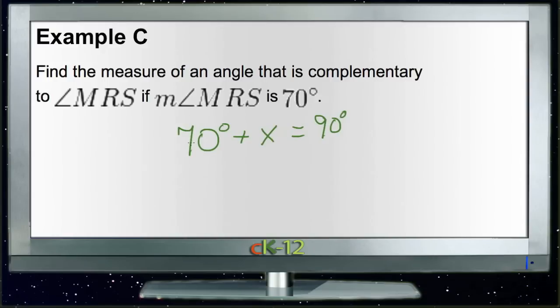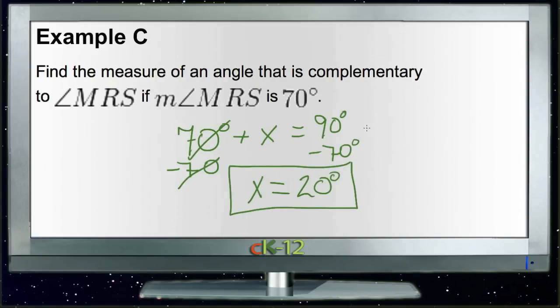Well, this is pretty simple now. We can see that all we need to do is subtract 70 from both sides, cancel the 70, and we have X equals 90 degrees minus 70 degrees, which is 20 degrees. So our missing angle is 20 degrees.